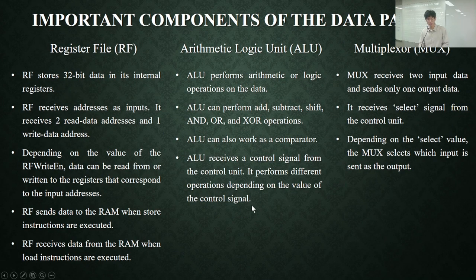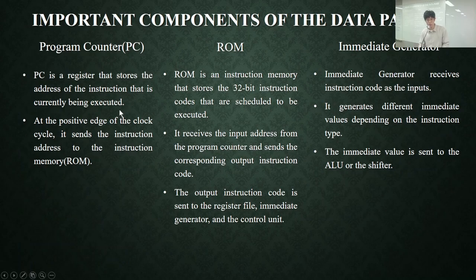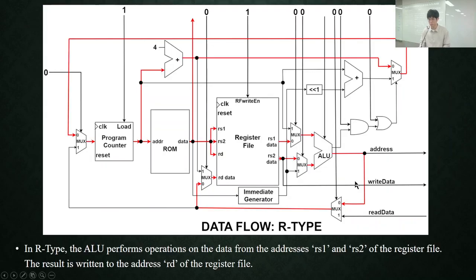This shows some components of the data path. Register file stores 32-bit data in its internal registers. ALU performs arithmetic and logic operations. Multiplexer receives two input data and sends only one output data. Program counter stores the address of the instruction currently being executed. ROM stores 32-bit instruction codes that are scheduled to be executed. Immediate generator generates immediate values and sends it to the ALU or the shifter.